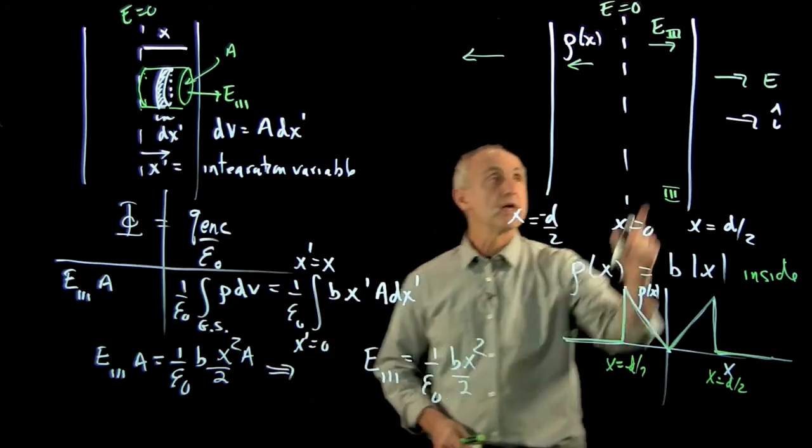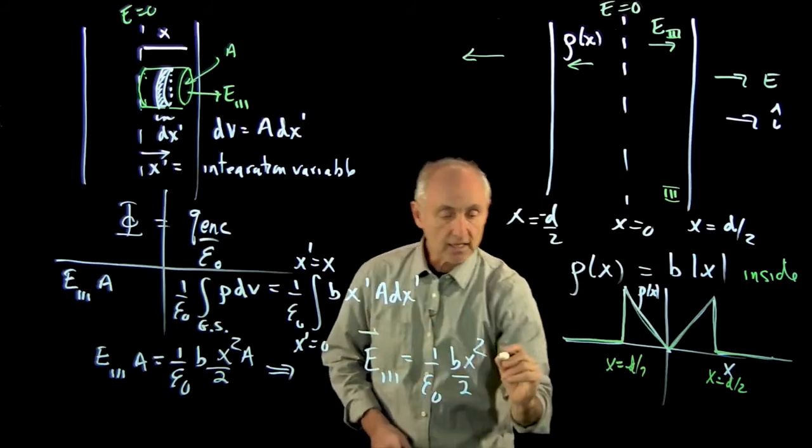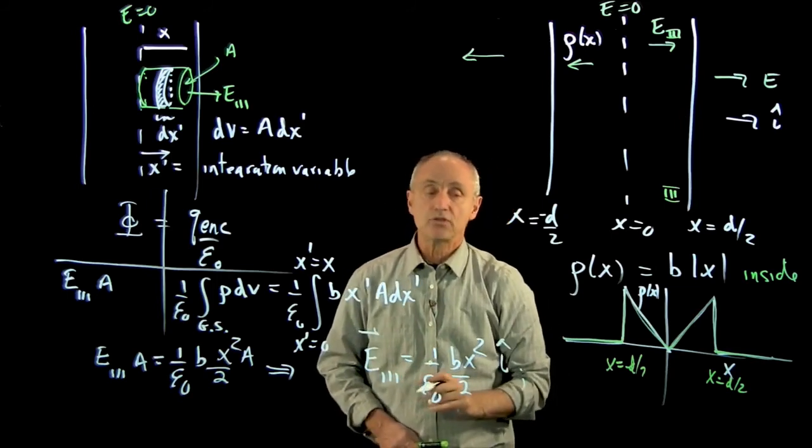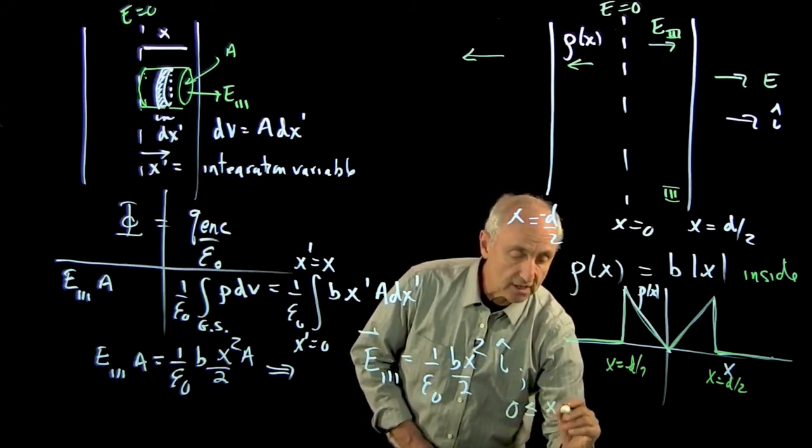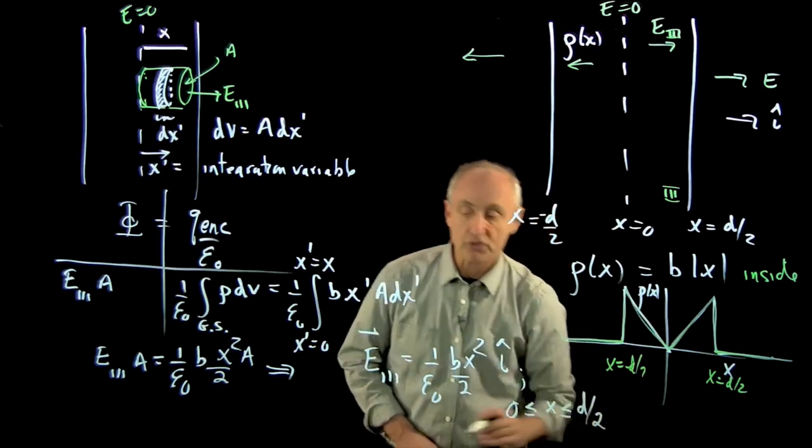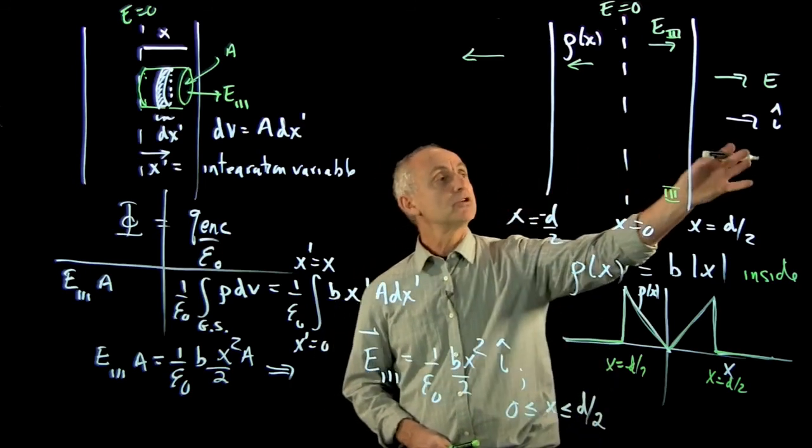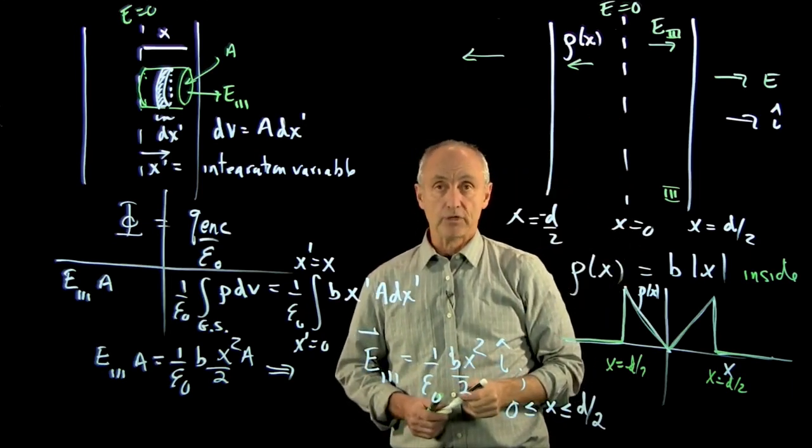Now, as far as direction goes, it's pointing in the plus i hat direction. And this answer is good only for the region 0 less than equal to x less than equal to d over 2. And that's a more difficult calculation. And now you can challenge yourself to calculate the electric field in the other three regions.